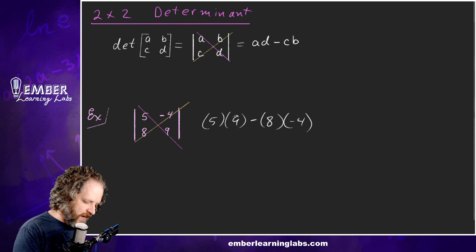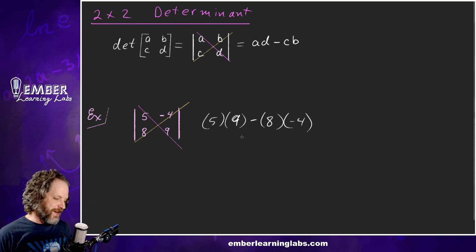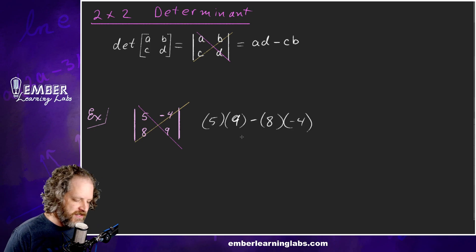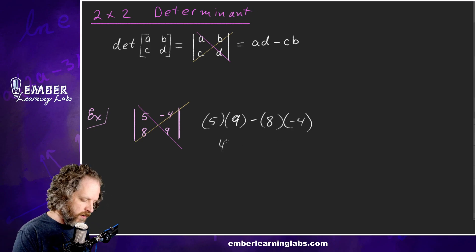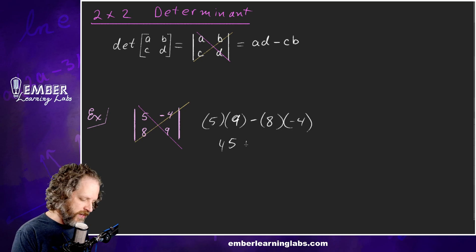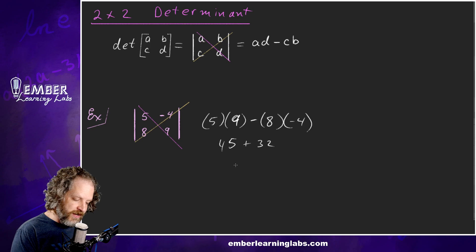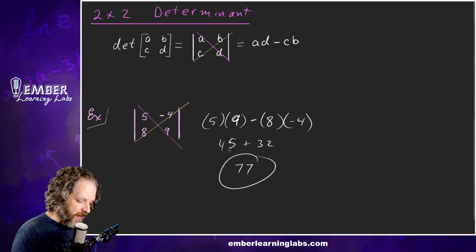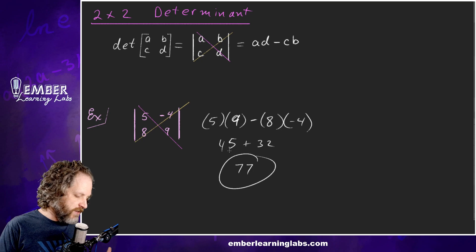So we've got 5 times 9, which is 45. Then negative 8 times 4 gives us plus 32, because subtracting 8 times negative 4 is plus 32. So 45 plus 32 is 77. That's how we find the determinant of a 2x2 matrix.